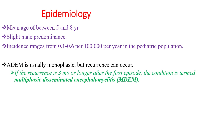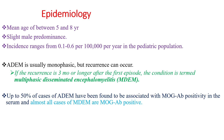ADEM is usually monophasic, but recurrence can occur. If the recurrence is 3 months or longer after the first episode, the condition is termed multiphasic disseminated encephalomyelitis. Up to 50% of ADEM cases have been found to be associated with MOG antibody positivity, and almost all cases of multiphasic disseminated encephalomyelitis are MOG antibody positive.